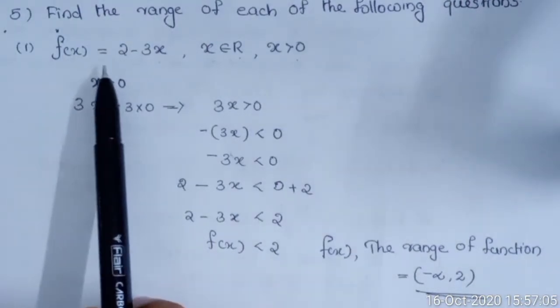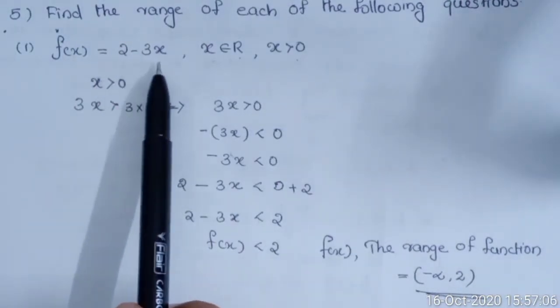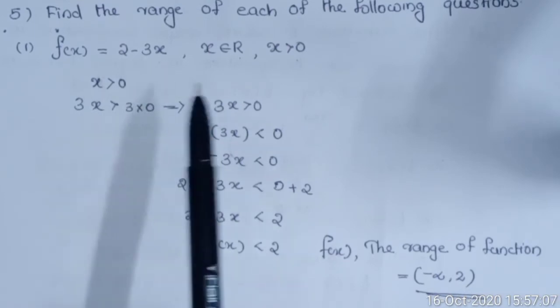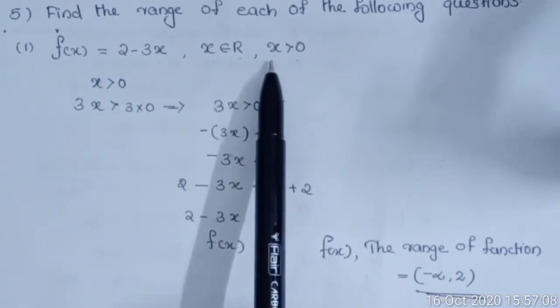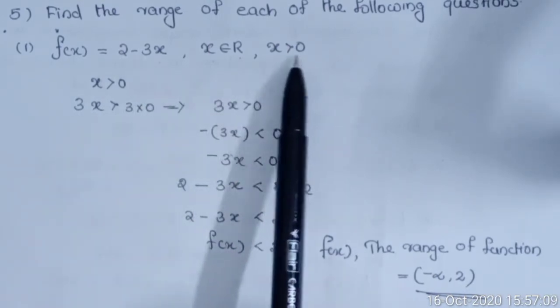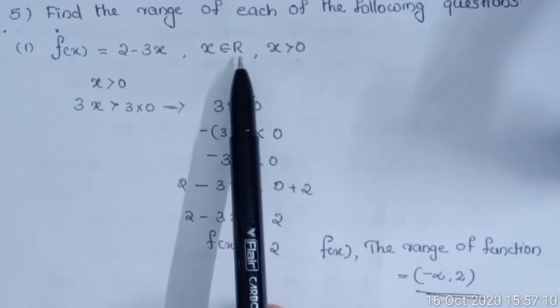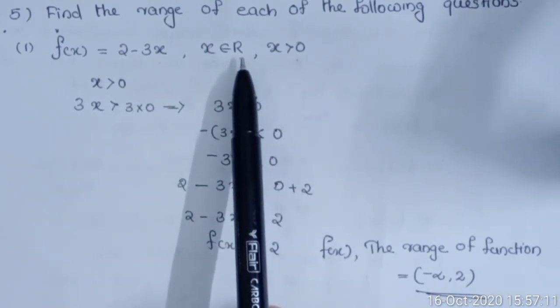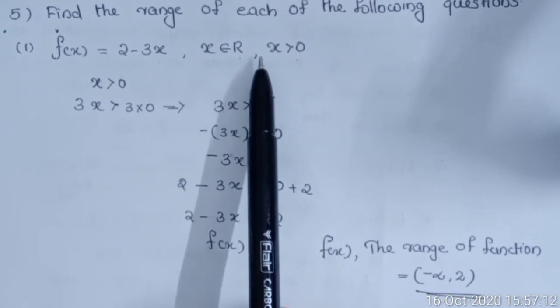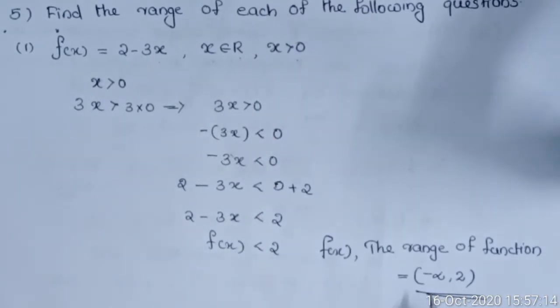To summarize: f(x) = 2 − 3x with domain x > 0, x ∈ R, i.e., positive real numbers. The range obtained is the open interval (−∞, 2).